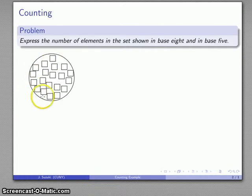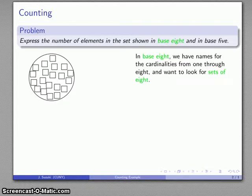So, to make that a little bit more clear, let's consider a set of a whole bunch of squares here. And how many things do I have in here? I want to express that number in base 8 and, for variety, also in base 5. So, I'm going to get two different answers depending on whether I'm working in base 8 or base 5.